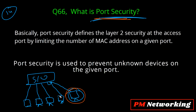To prevent this problem, we use port security. What port security does is it lets you bind the MAC address of a PC to a specific interface. So if the switch receives traffic on that interface from any other MAC address, the port will automatically go down. For example, if the computer's MAC address is 0A and an attacker's MAC address is 0C, whenever the switch receives traffic with source MAC 0C, it will shut down that interface automatically.